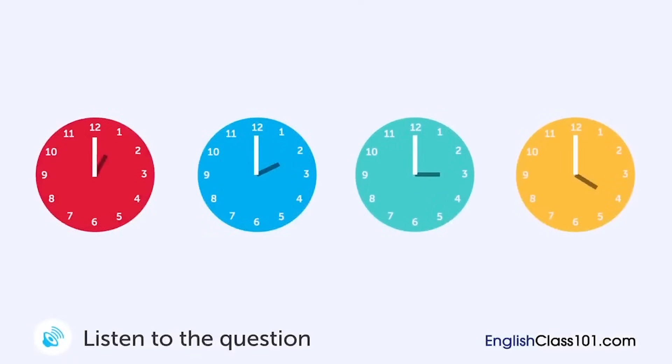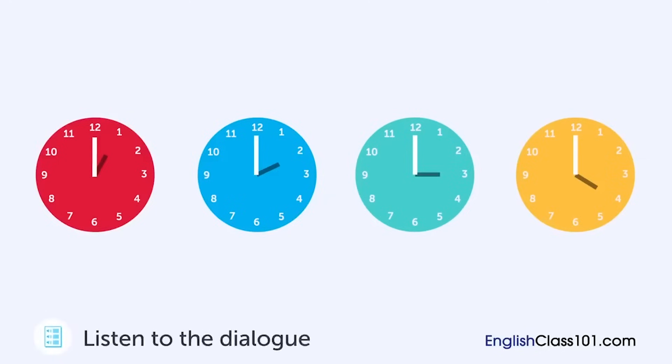A teacher and a student are talking. When will the student go to the teacher's office? — 'I didn't really understand today's class.' 'I see. What was confusing?' 'Several things.' 'Do you have time now?' 'Actually, I'm a little busy. Could you come to my office in the afternoon? I'll be there from 1 p.m. to 4 p.m.' 'Okay, I'll be there at 2 p.m.'